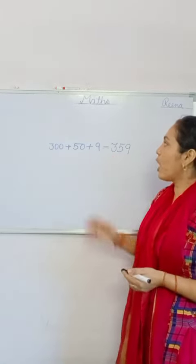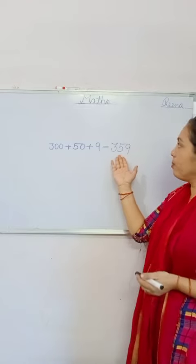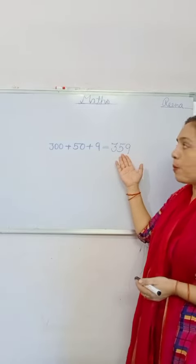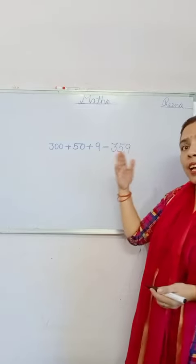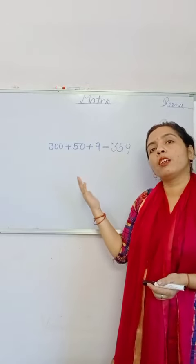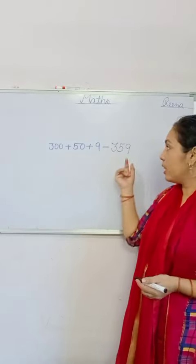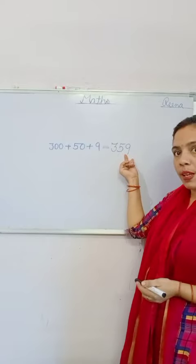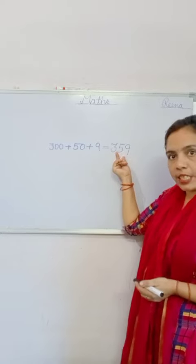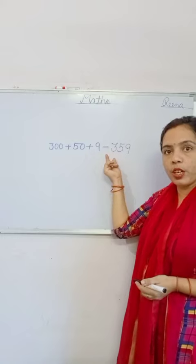Now, if you are given a number, how many 1s, how many 10s, how many 100s are there? Tell me. Here, 9 is in the 1s place, 5 is in the 10s place, and 3 is in the 100s place.